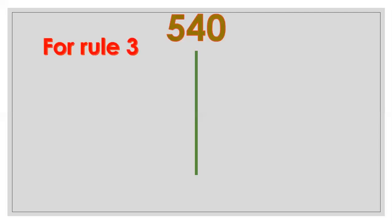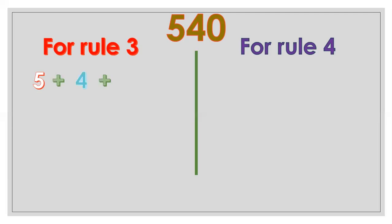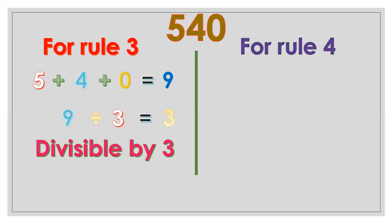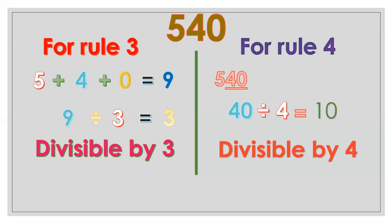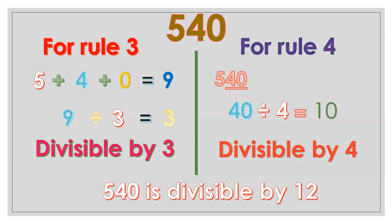Another example: 540. For divisibility by 3: 5 plus 4 plus 0 equals 9, and 9 divided by 3 equals 3, so it is divisible by 3. For divisibility by 4, the last two digits are 40. Since 40 divided by 4 equals 10, it is divisible by 4. Since both criteria are met, 540 is also divisible by 12.